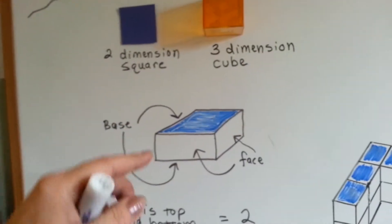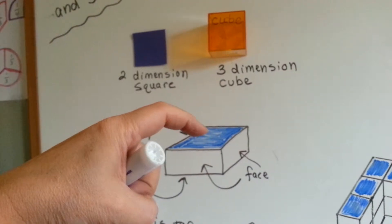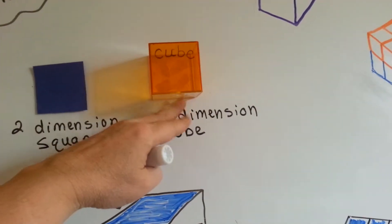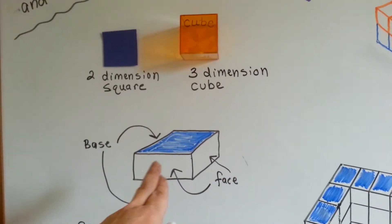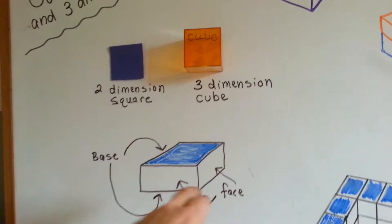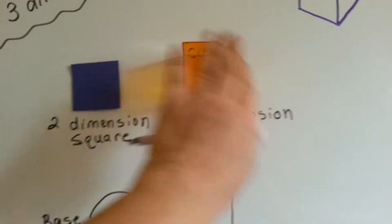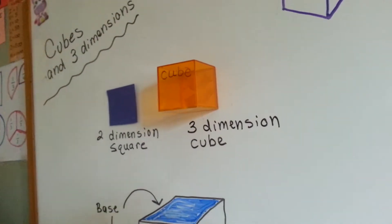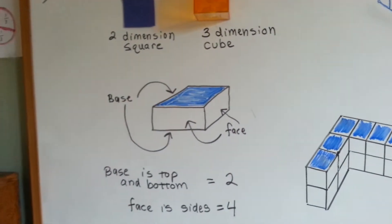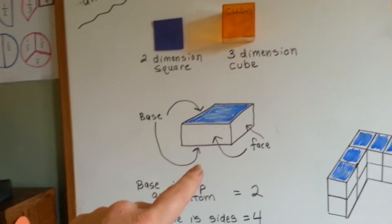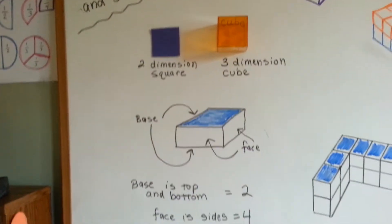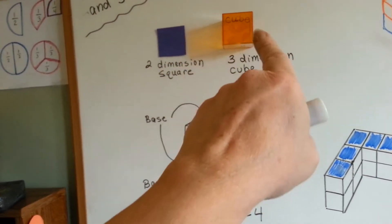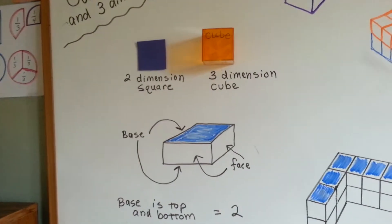The parts of a cube: you've got a base on top and a base on the bottom. Each one of these sides are called a face. There's a face here, a face there, and another face. I took some tape and glued the back face onto my dry erase board. So the base is the top and the bottom — there are 2 of them. The face is the sides — there are 4 of them: 1, 2, 3, and the 4th one is the part stuck to the board.